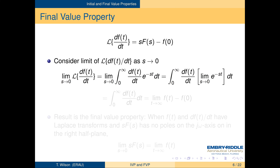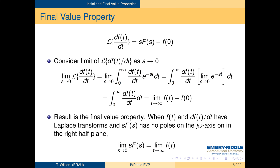Since we let s go to infinity to find the initial value, let's see if letting s go to 0 lets us find the waveform's final value. We take the limit into the integral; now e to the minus st goes to 1 as s goes to 0, and the integral is just the antiderivative of df/dt evaluated at infinity and at 0. When we put that into our expression, the f(0) terms cancel and we're left with the final value property. The catch is that s·F(s) can have no poles on the j-omega axis or in the right half of the s-plane.